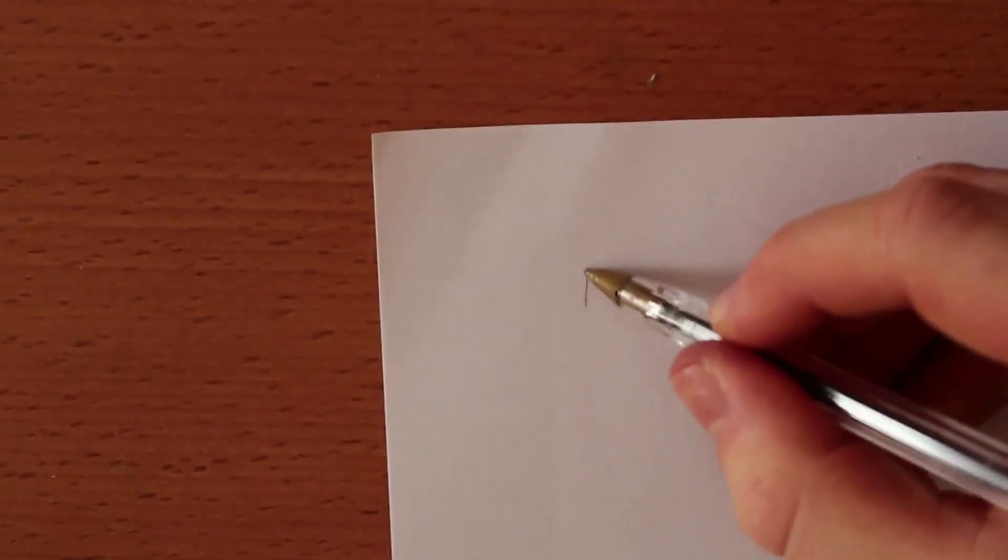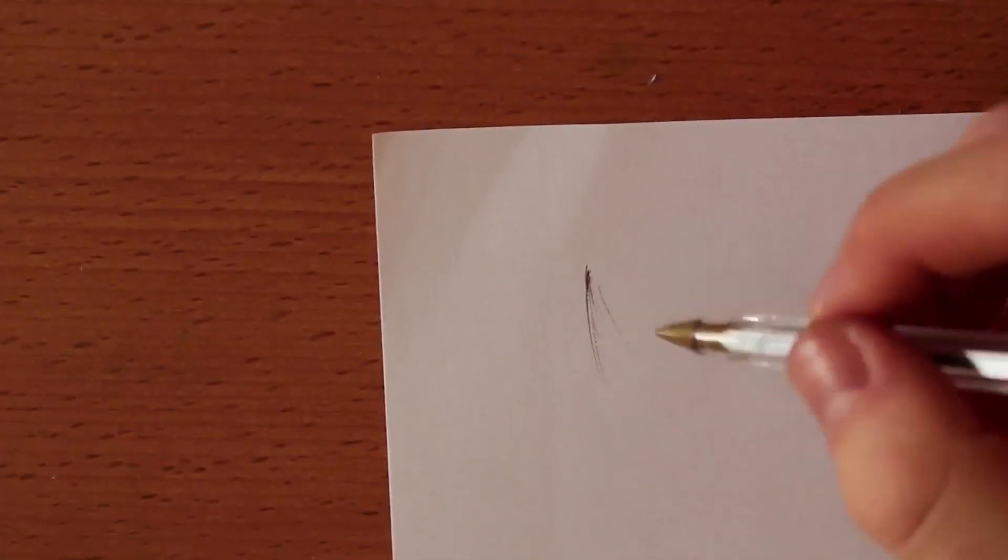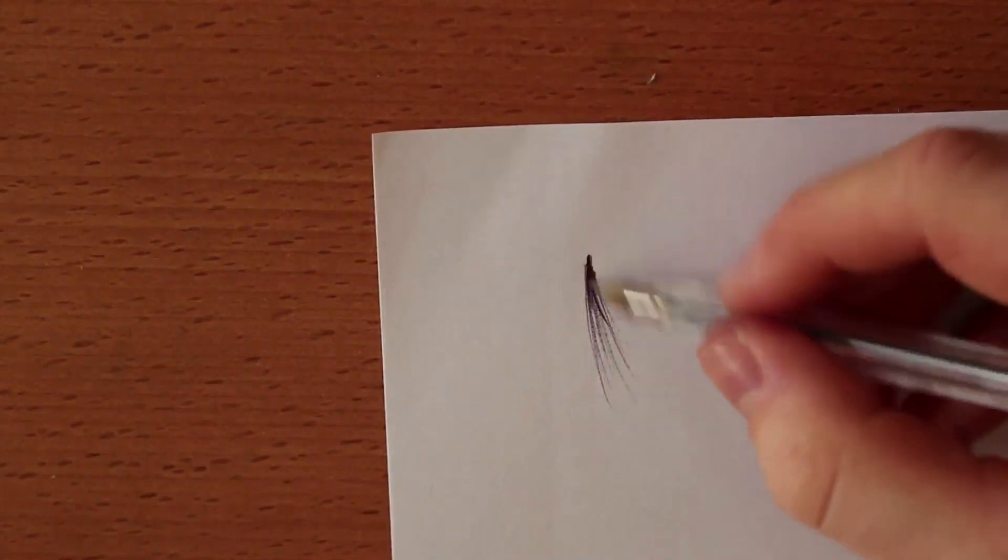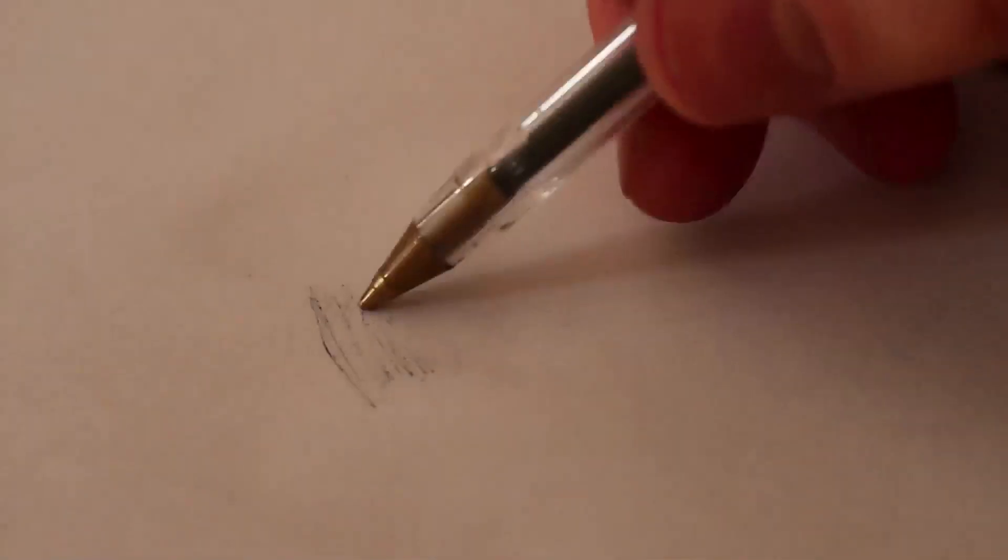By being especially aware of the amount of pressure that you're putting down onto the paper you can actually get quite a good range of light and dark tones using a simple biro. Here you can see that it is actually possible to do incredibly light tones.